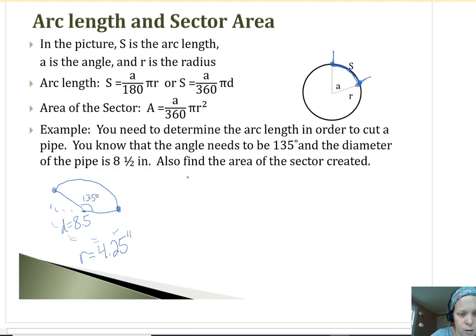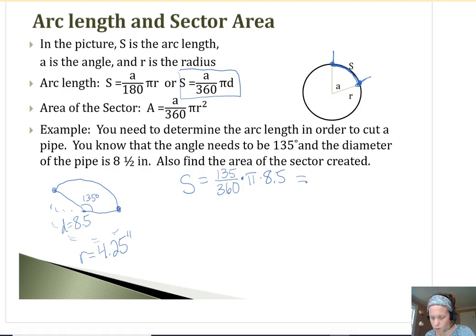So to figure out the arc length, I'm going to go off of actually the S equals A divided by 360 pi times D. Because what this really is doing, it's 135 out of the 360 full degrees. So 135 out of the full around, full degrees around. So it's getting just that portion of the full circle. And then we take that times the circumference. So pi times diameter. So pi times 8.5. So 135 divided by 360 and then times pi times 8.5 is 10.0138.